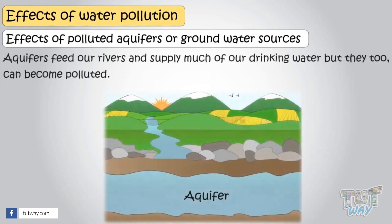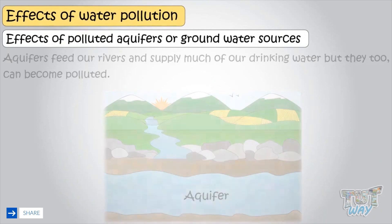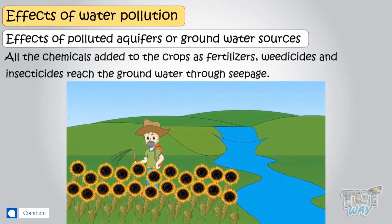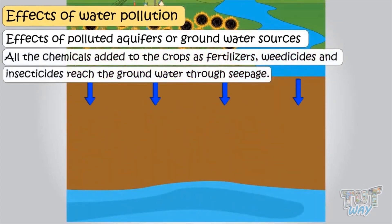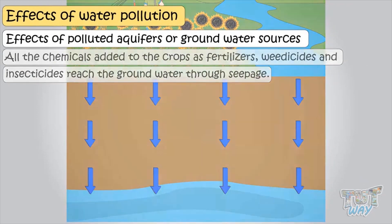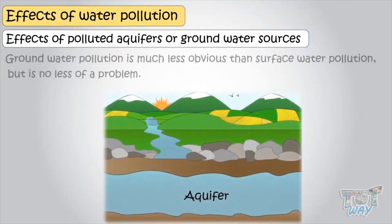Aquifers feed our rivers and supply much of our drinking water. They too can become polluted as all the chemicals added to crops as fertilizers, weedicides, and insecticides reach the groundwater through seepage. Groundwater pollution is much less obvious than surface water pollution, but is no less of a problem.